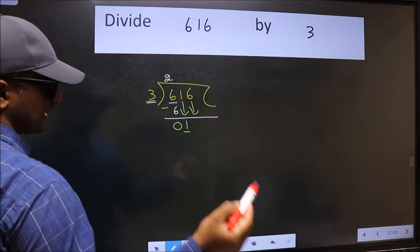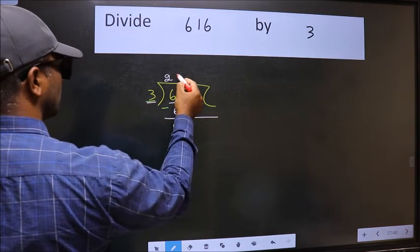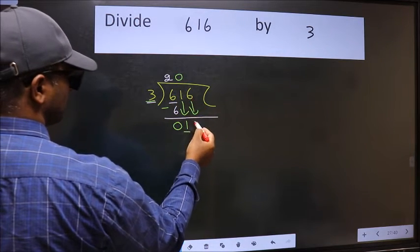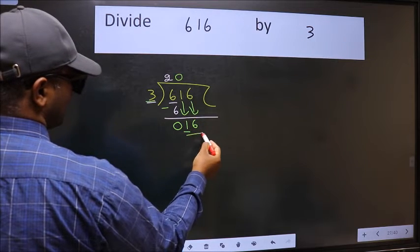And the rule to bring down the second number is we should put 0 here. Then only we can bring this number down. Now 16.